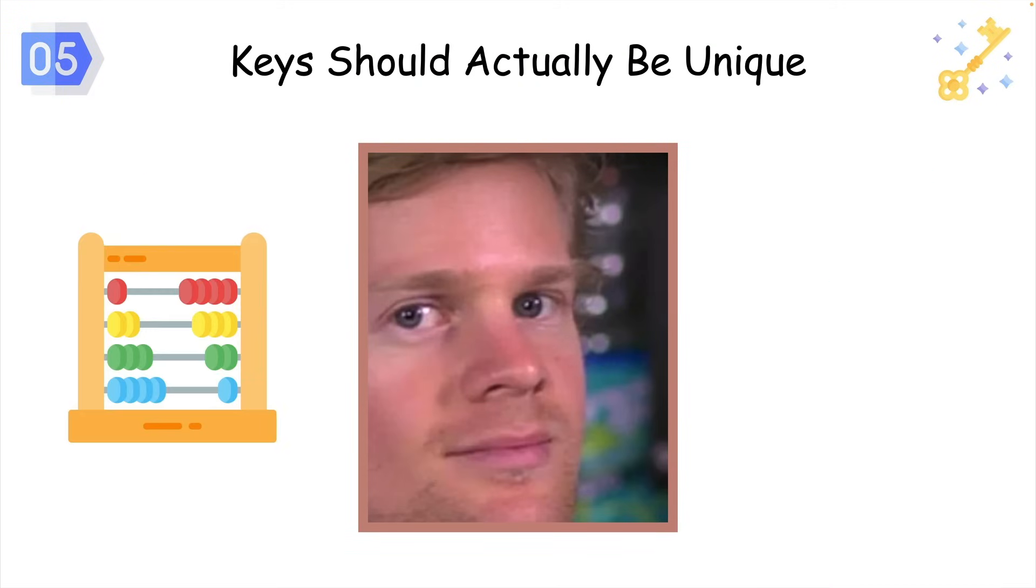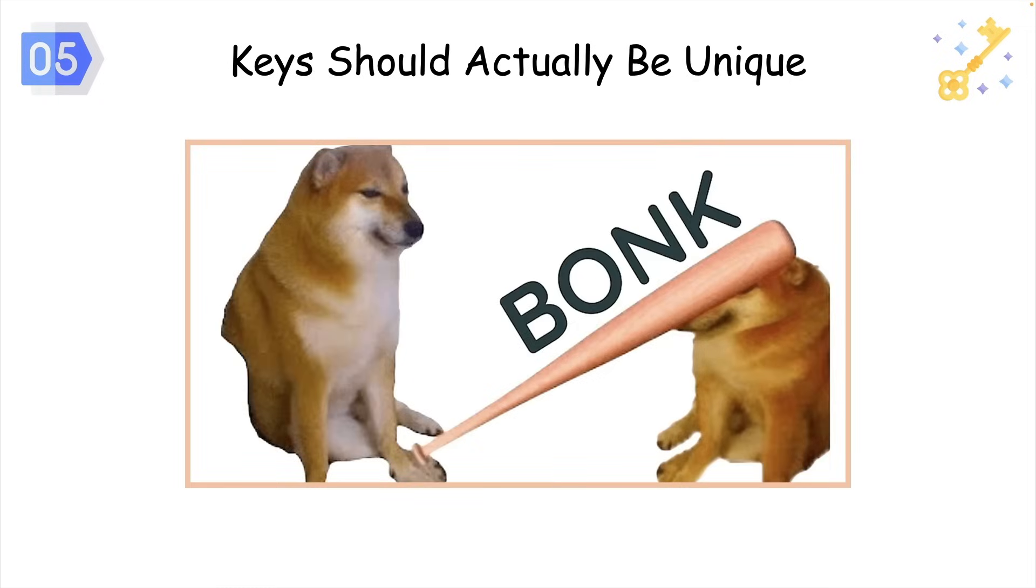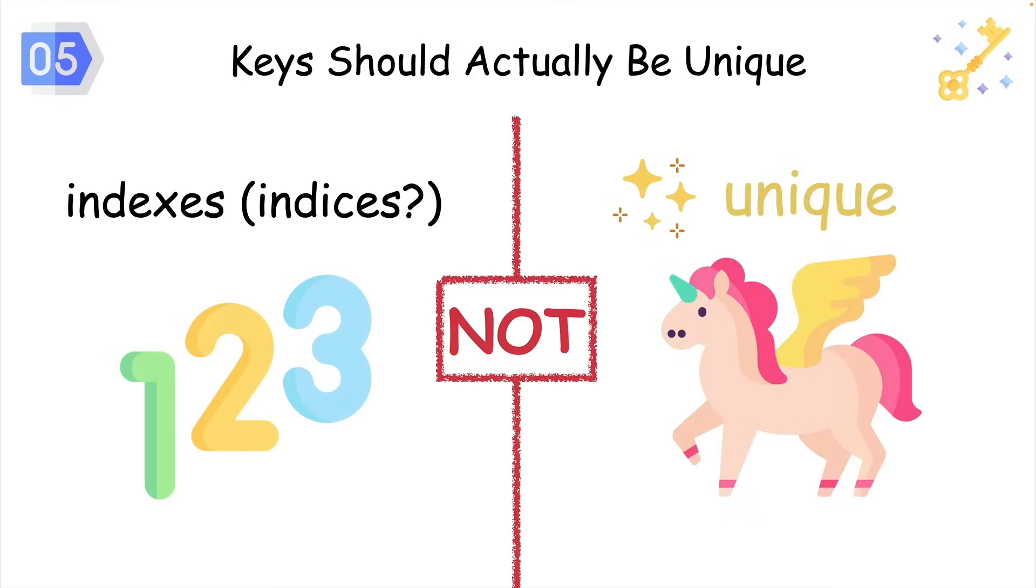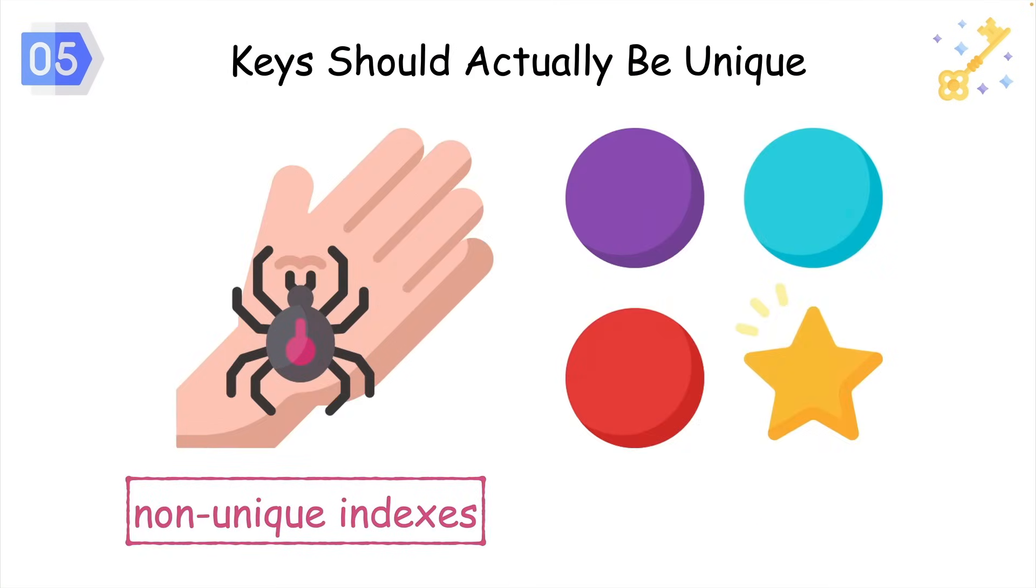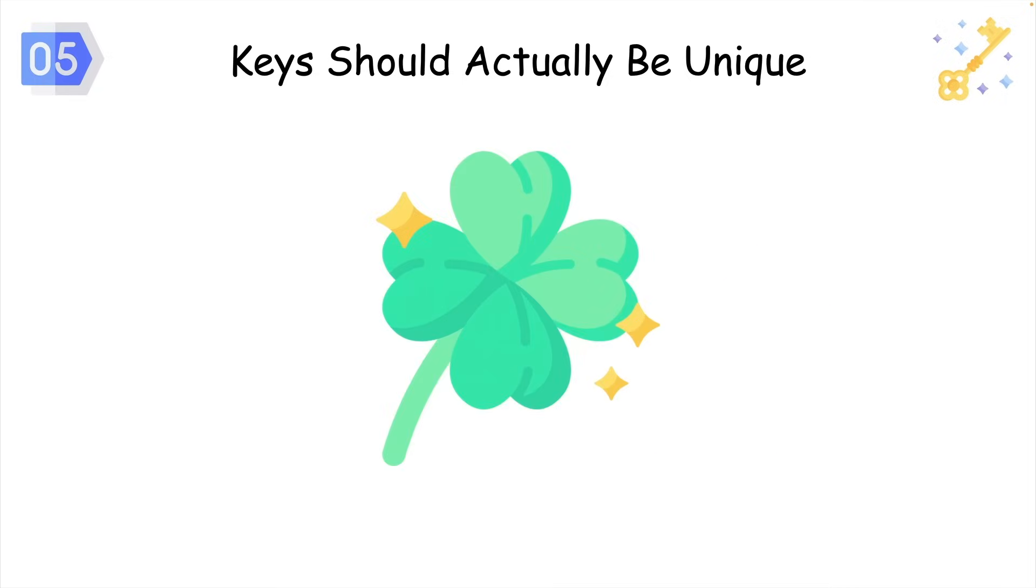Now be honest, how many times have you written code like this as a React developer? I've done it too many times to count, but this is a big no-no. Indexes that we get from the map function are not unique. Using non-unique indexes can come back to bite you, because unique values are the only way for React to tell list items apart.